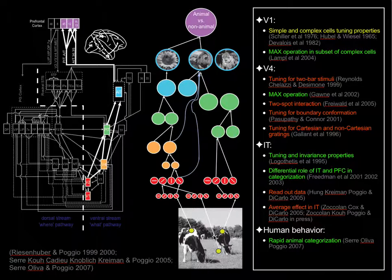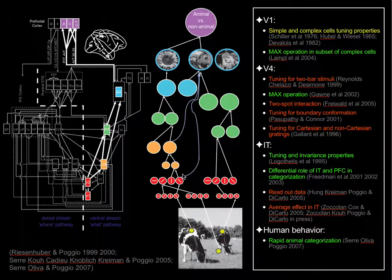Small patches of the image could contain information about edges. These edges could be combined into edges that are more independent of position, size, or thickness. You can keep grouping features into more and more complicated representations — for example, a feature that represents an eye, then a feature that represents a face, and then a feature that represents an entire person. This is the hierarchical model.